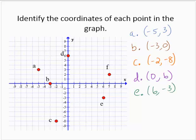And finally, point F has an x-coordinate of 7 and a y-coordinate of 2, so point F can be defined by (7, 2).